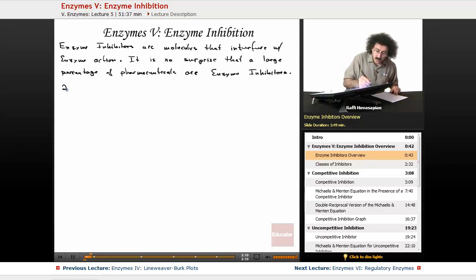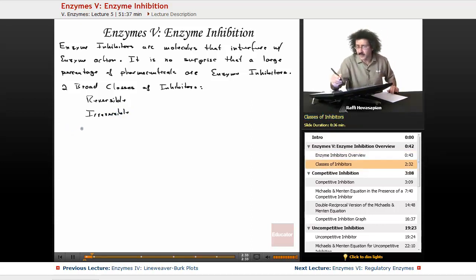Now there are two broad classes of enzyme inhibitors. We have something called reversible and irreversible. Now let's deal with the reversible first.